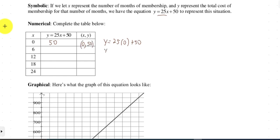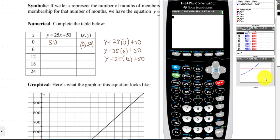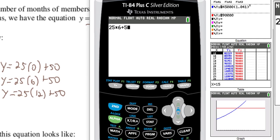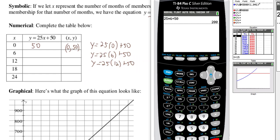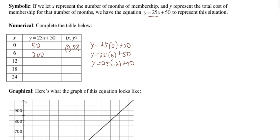If you were there six months, Y would equal 25 times 6 plus 50. If you were there 12 months, it'd be Y equals 25 times 12 plus 50. And you can work this out in your calculator. If I wanted to do something like 25 times 6 plus 50, that would give me my answer for this one, 200. So this would be 200, and this would be 6 comma 200.